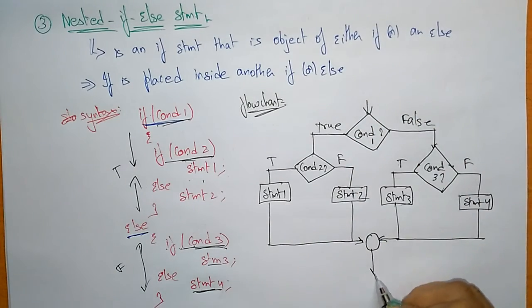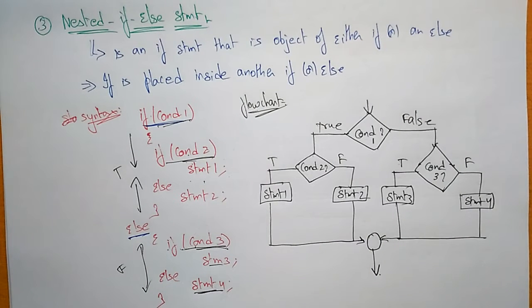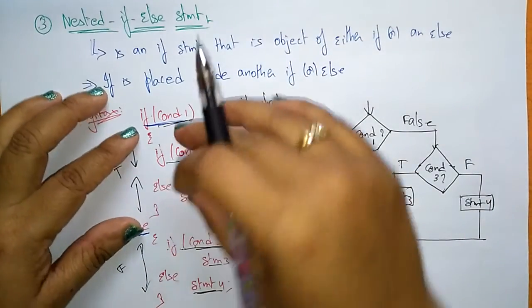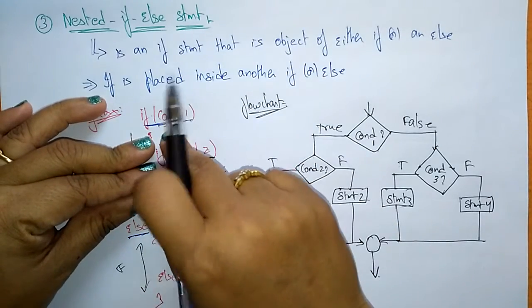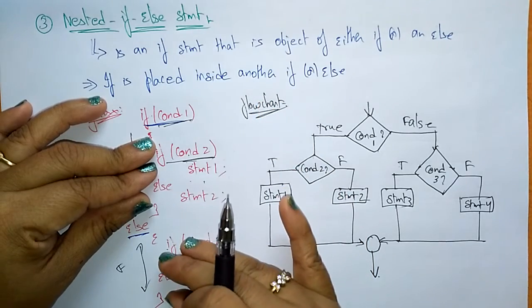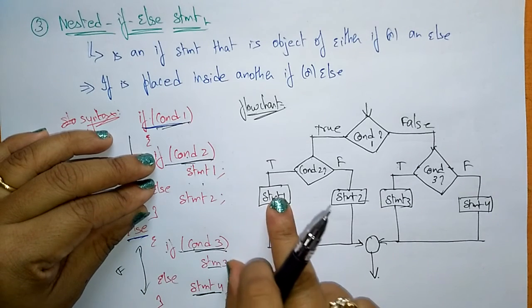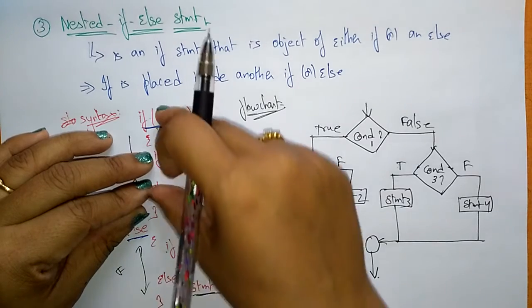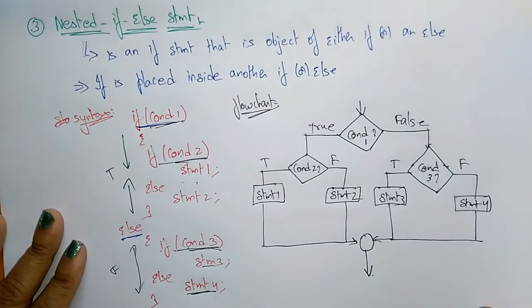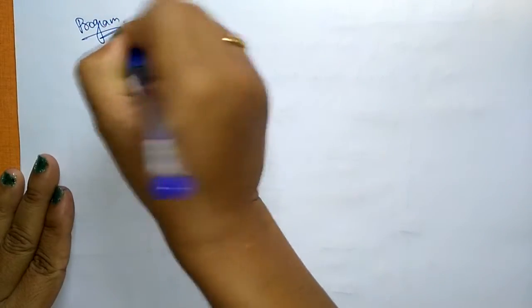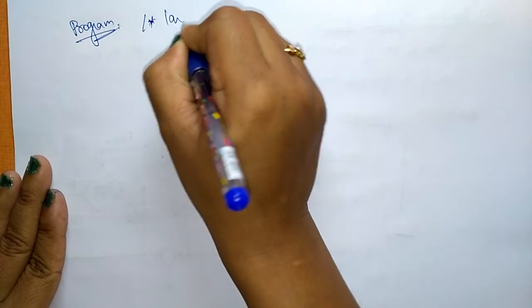After all these conditions are evaluated — true or false — and their respective statements execute, the program continues with the remaining steps. Whenever you write the program, think clearly: if this condition is true, execute some statement; otherwise execute the false statement. Then it checks another condition — if true, execute one statement, else the second. Let me explain with a program for nested if-else.